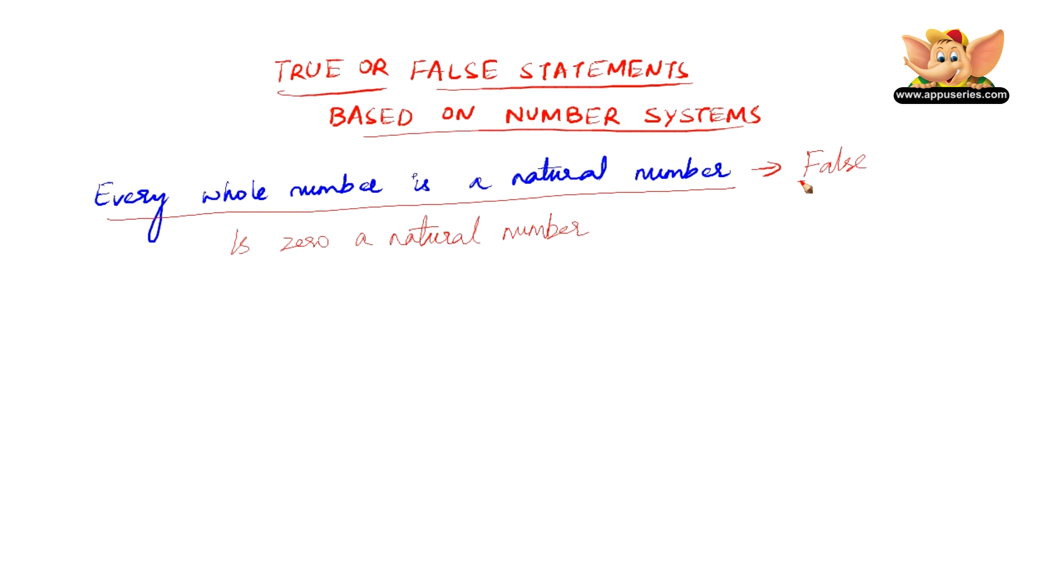Let us go to another statement. Every integer is a rational number. Now, this is a straightforward question, quite easy one. Before we answer this is true or false.